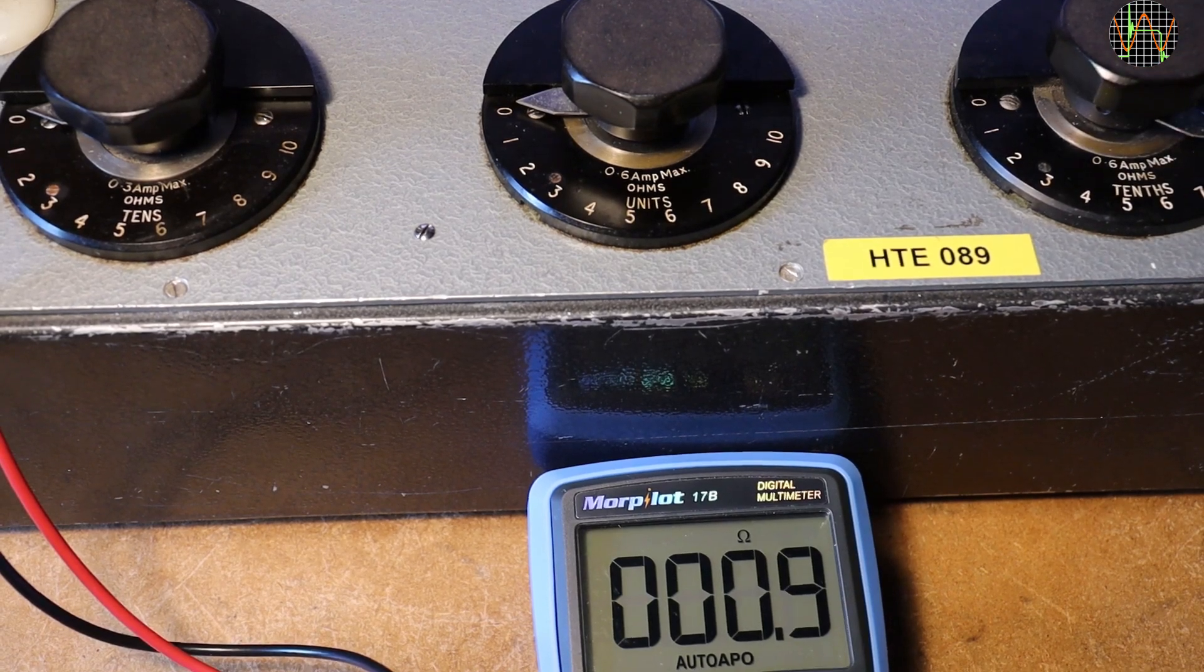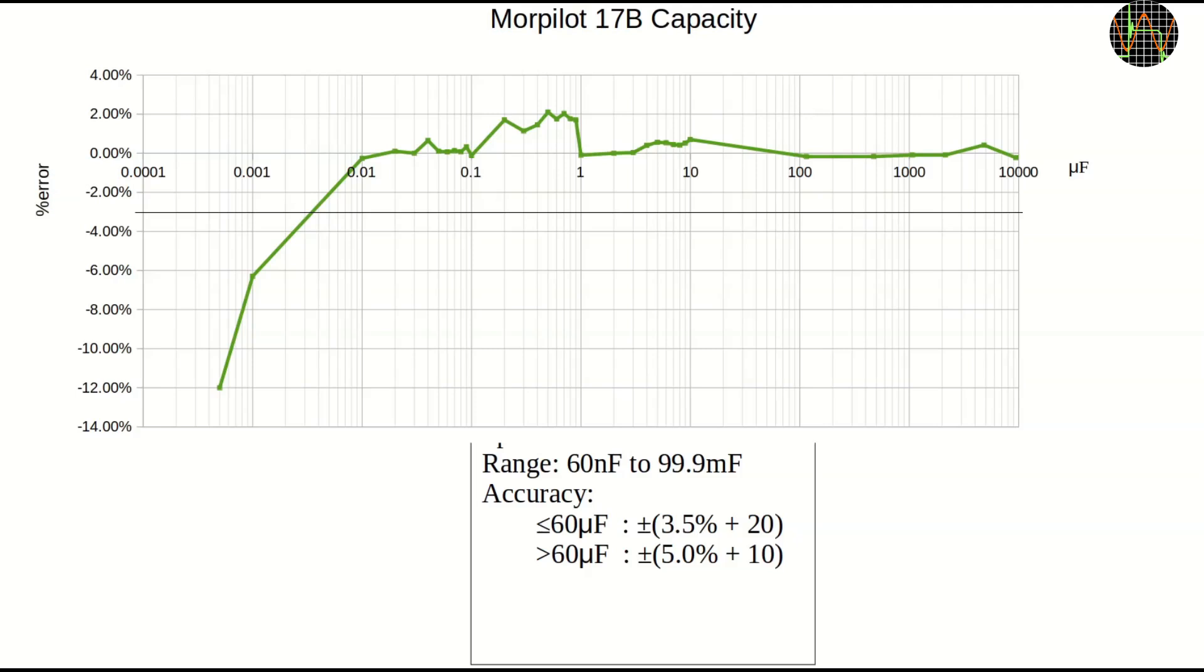On capacity measurements, the accuracy of the Morpilot is equal or better than the spec from 5nF onwards to 10mF which is the highest value I tested. It is rated to measure up to 99.9 mF which is impressive but I have no caps in that range.